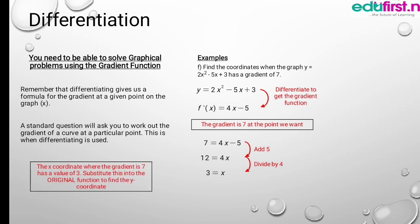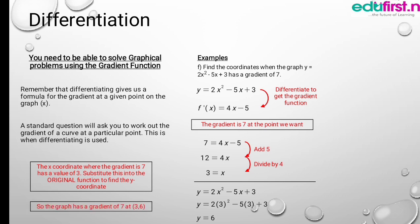The x coordinate where the gradient is 7 has the value of 3. Substitute this into the original function to find the y coordinate. The original function is y equals 2x squared minus 5x plus 3. Substituting x equals 3: y equals 2 times 3 squared minus 5 times 3 plus 3, which gives y equals 6. So the graph has a gradient of 7 at the point (3, 6).